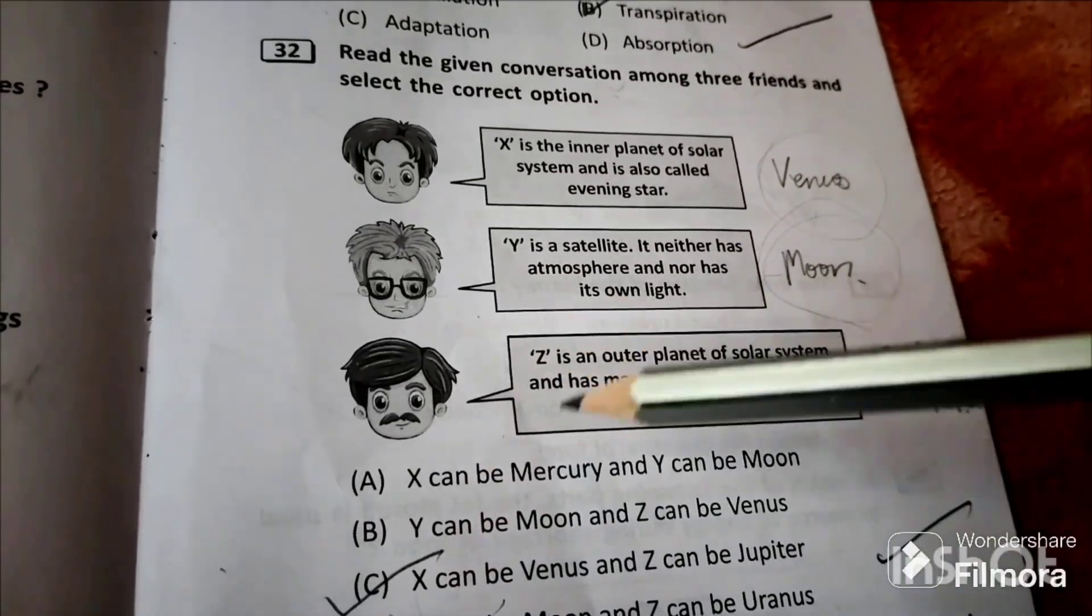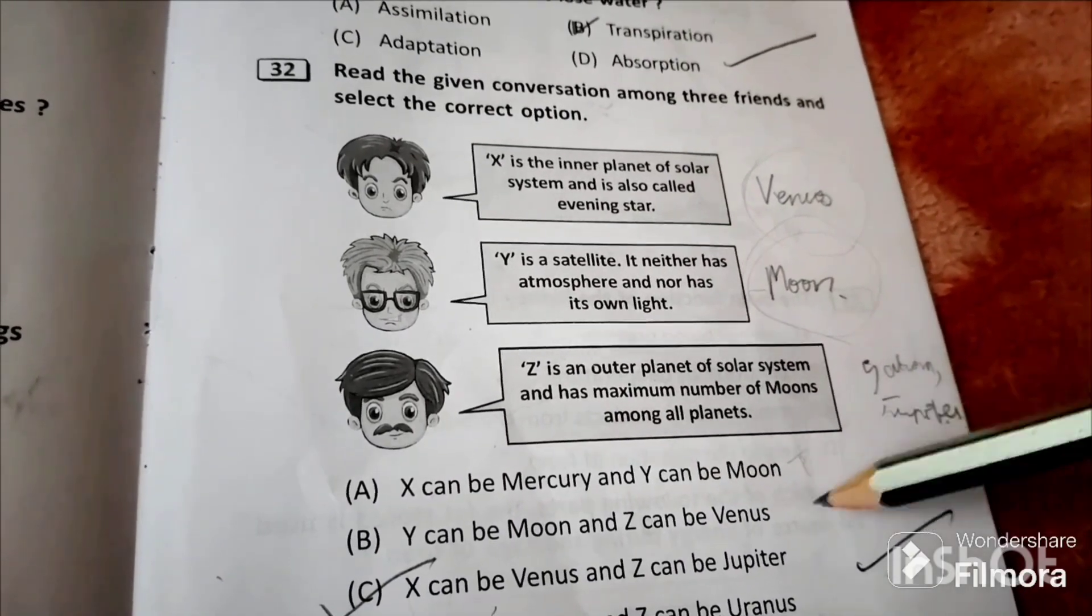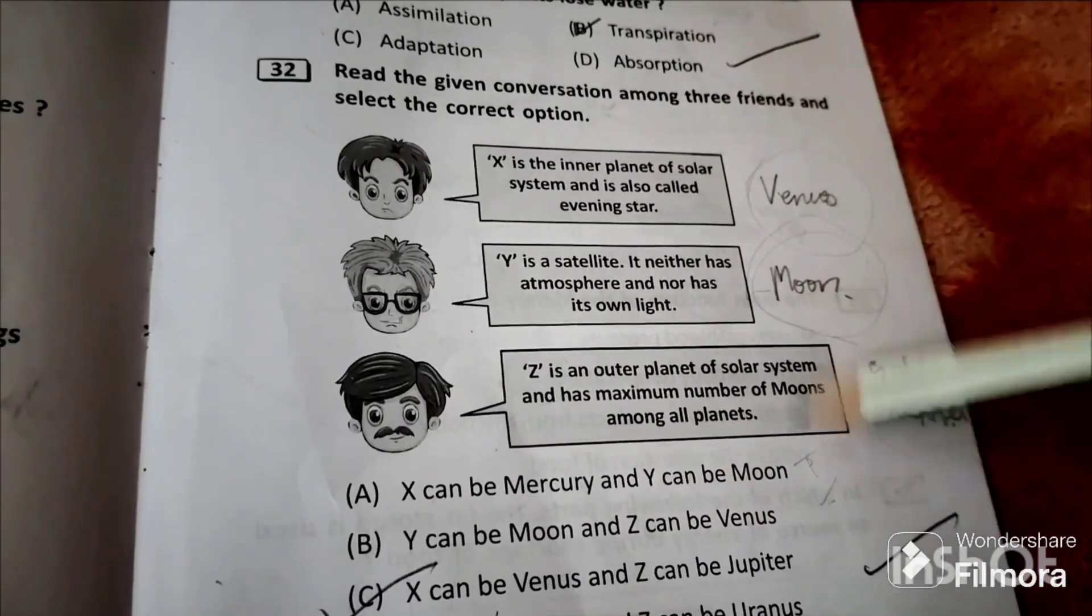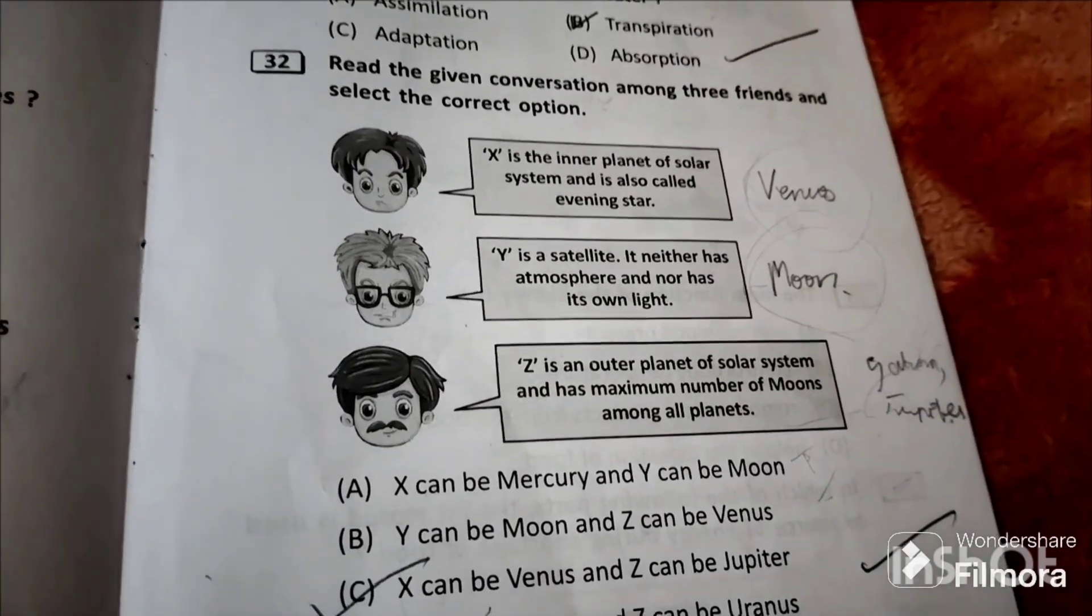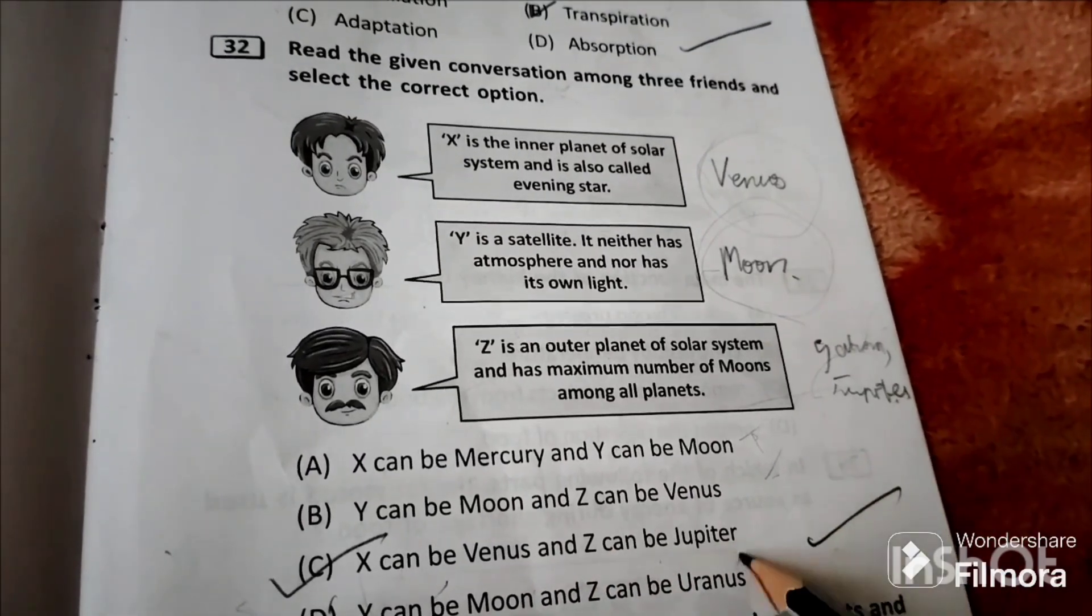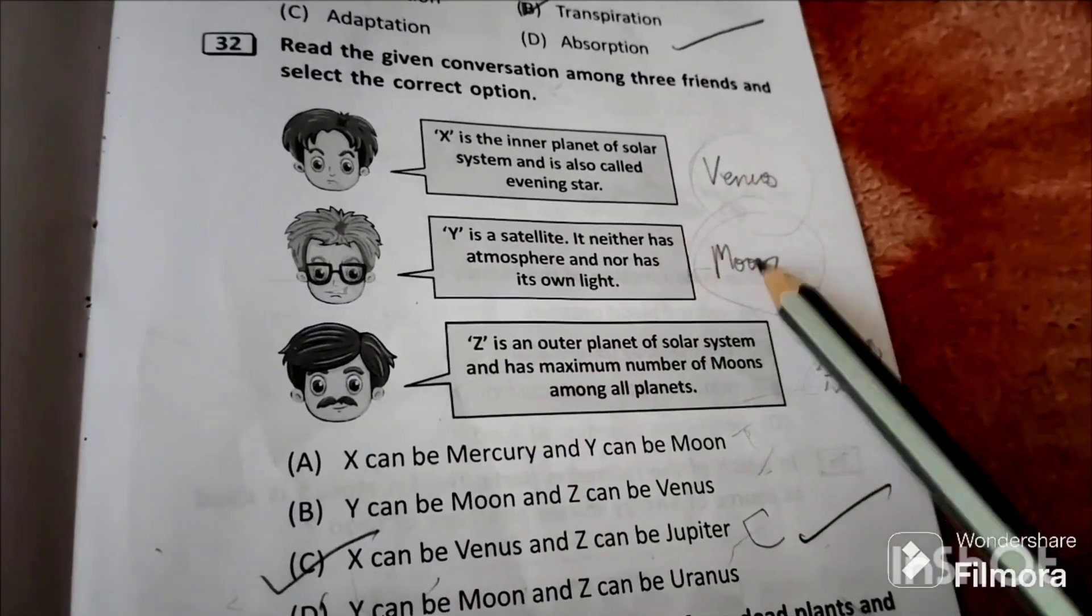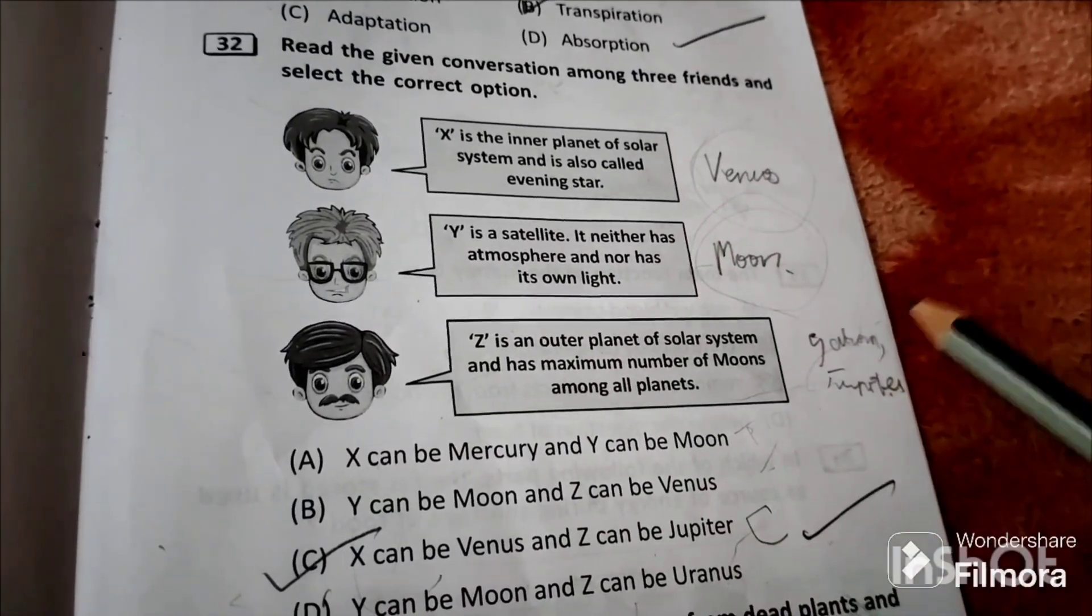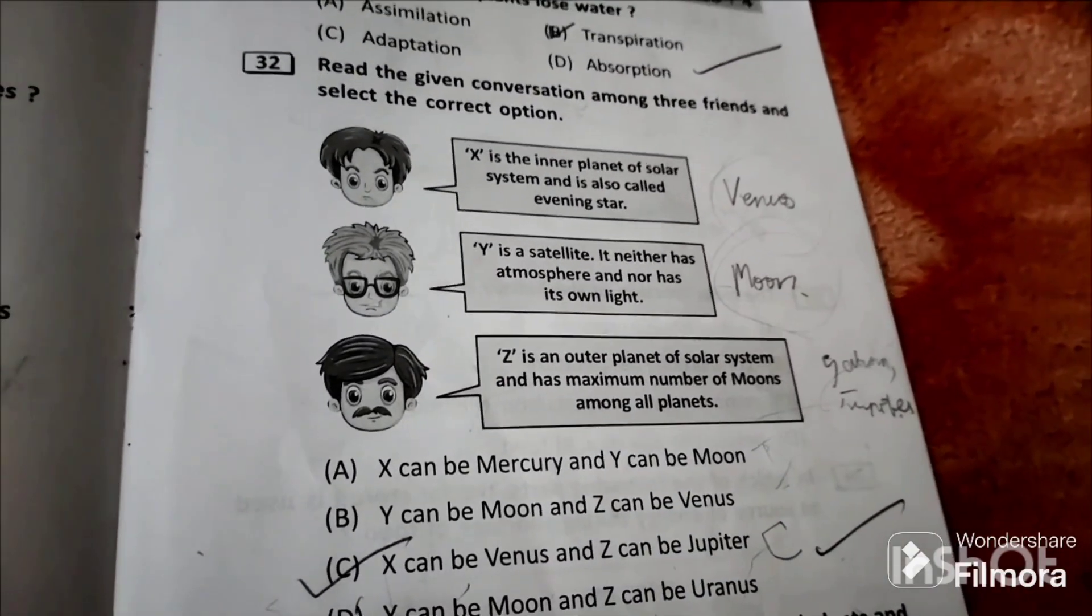X can be Mercury and Y can be Moon is incorrect. Y can be Moon and Z can be Venus is also incorrect because Z is Jupiter. X can be Venus and Z can be Jupiter is correct. So this is the answer. Y can be Moon is correct but Z can be Uranus is wrong because Uranus doesn't have maximum number of moons. So option C is the answer.